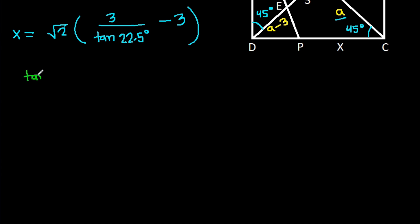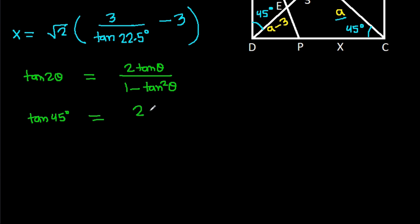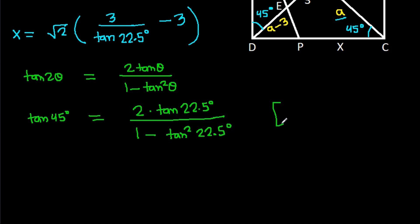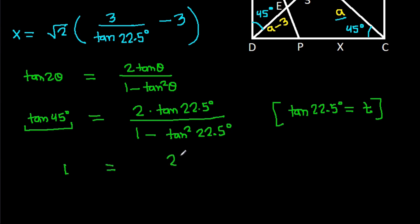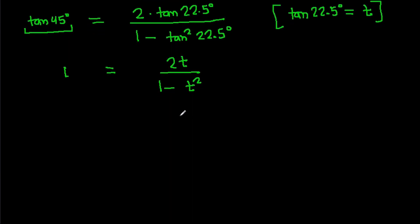We know that tan 2θ = 2 tan θ over (1 minus tan² θ). So tan 45° = 2 tan 22.5° over (1 minus tan² 22.5°). Setting tan 22.5° = t, we get 1 = 2t over (1 minus t²). Cross-multiplying gives t² + 2t minus 1 = 0.